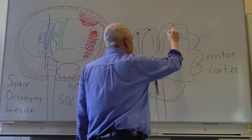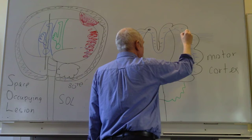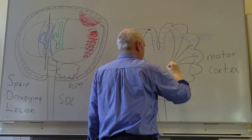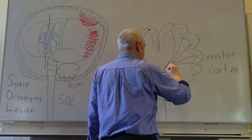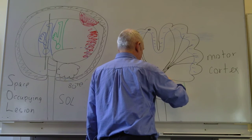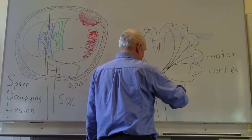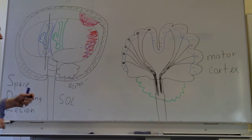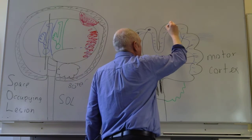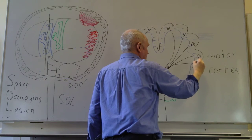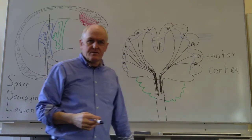The same happens on the other side. The bundle goes down through the brain and then down the front — a big bundle of motor nerves goes down the front of the brain stem. These are coming from motor neuron cell bodies, the clever part of the nerve cell.